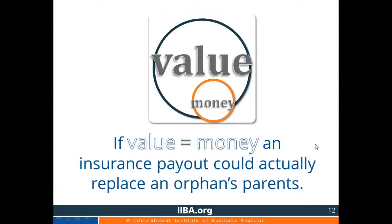One bone of contention between Joy and me has been the idea that value is money, at least in an organization. I have a different opinion — I think money is a subset of value. It's one way of representing one narrow band of value, and it's critical for business analysts in particular to understand the difference. If value really does equal money, then an insurance payout should be able to replace an orphan's parents. Clearly, the money doesn't replace the parent. Many purchasing decisions are based on an experience, a feeling, or a relationship with an organization — and those go beyond just the dollars.